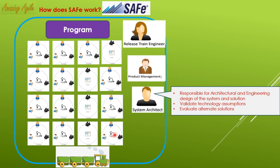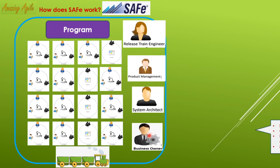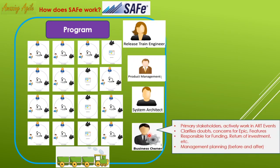The System Architect also works with all team members to discuss the architecture runway. The next role is Business Owner — this could be the client or top management. Responsibilities include being the primary stakeholder, actively working on ART events, clarifying doubts, correcting course, creating epics, and being responsible for funding and return on investment. The Business Owner enforces the agile mindset and verifies it is properly implemented. They are the chief person of the entire program.